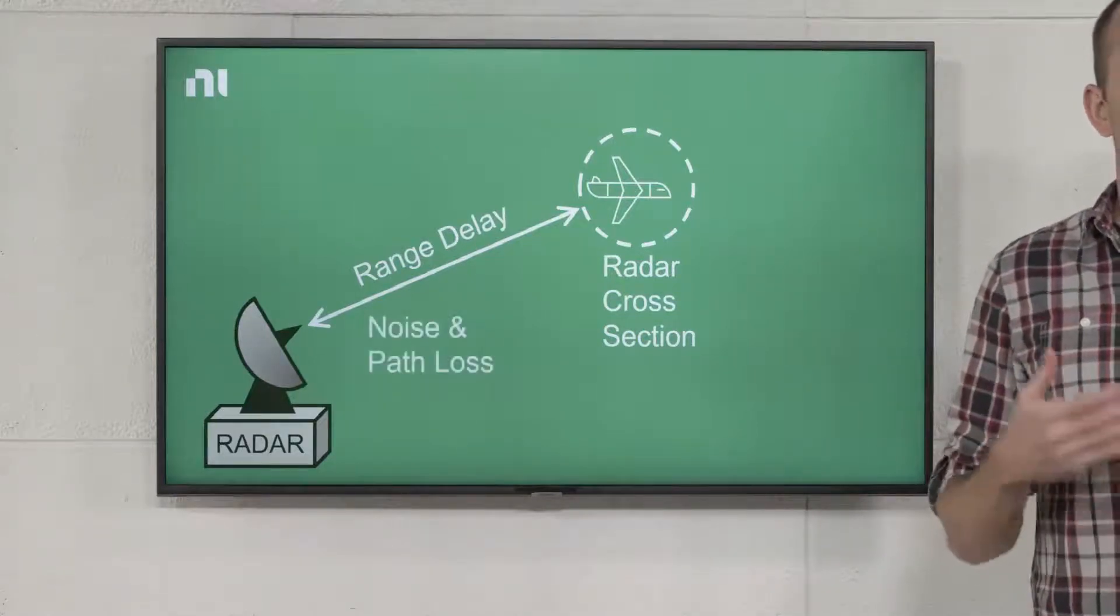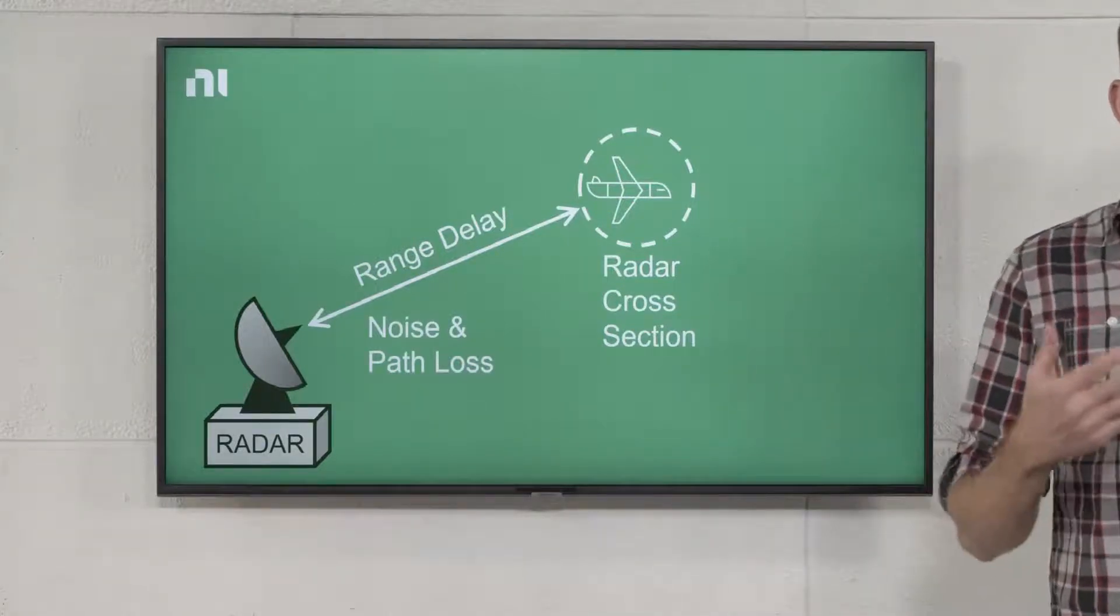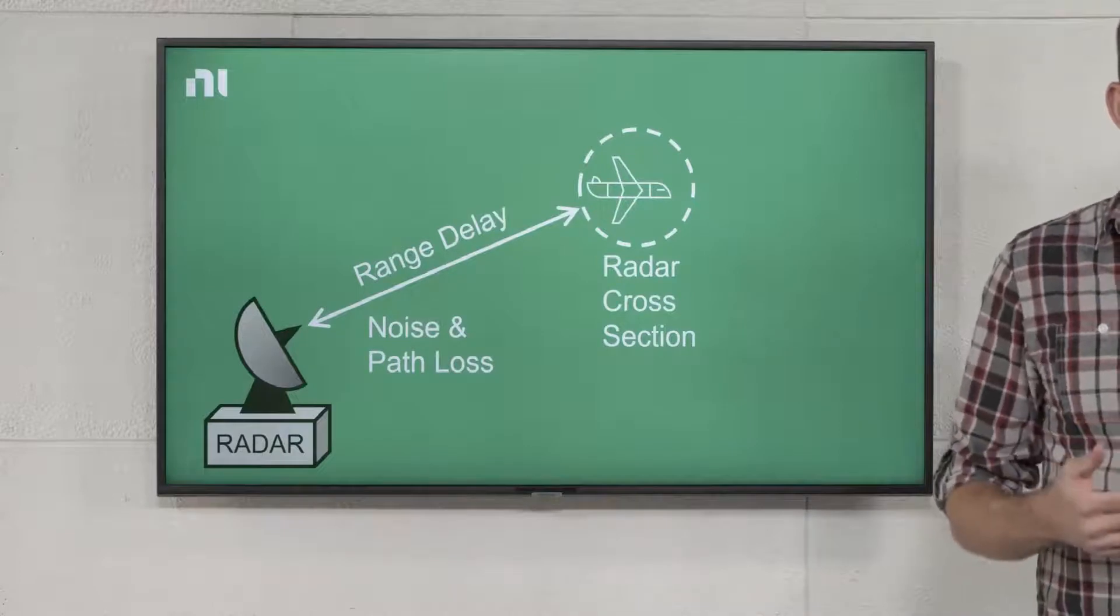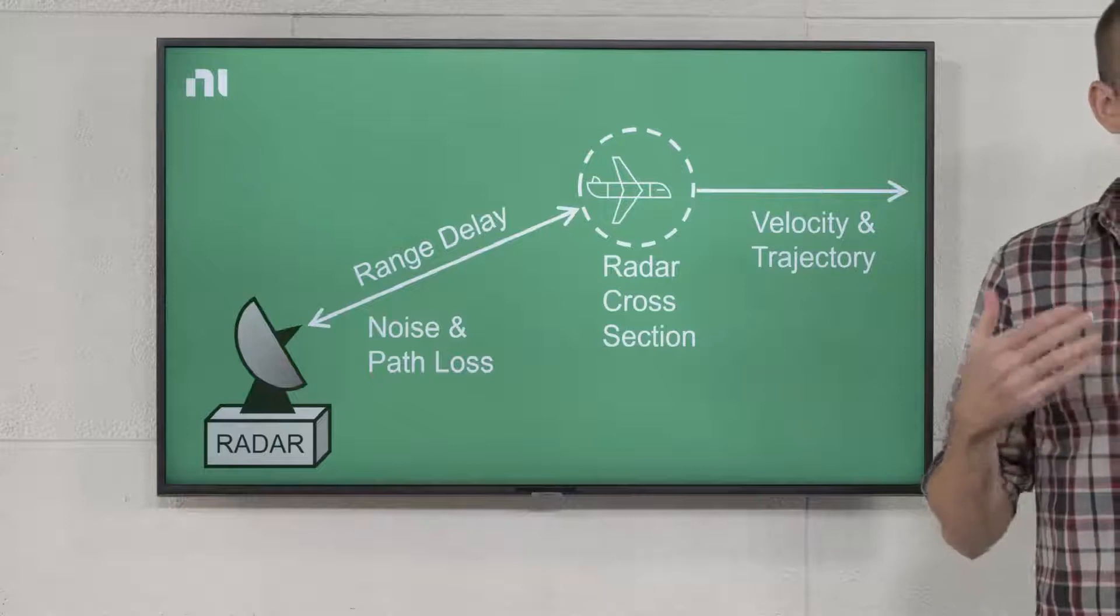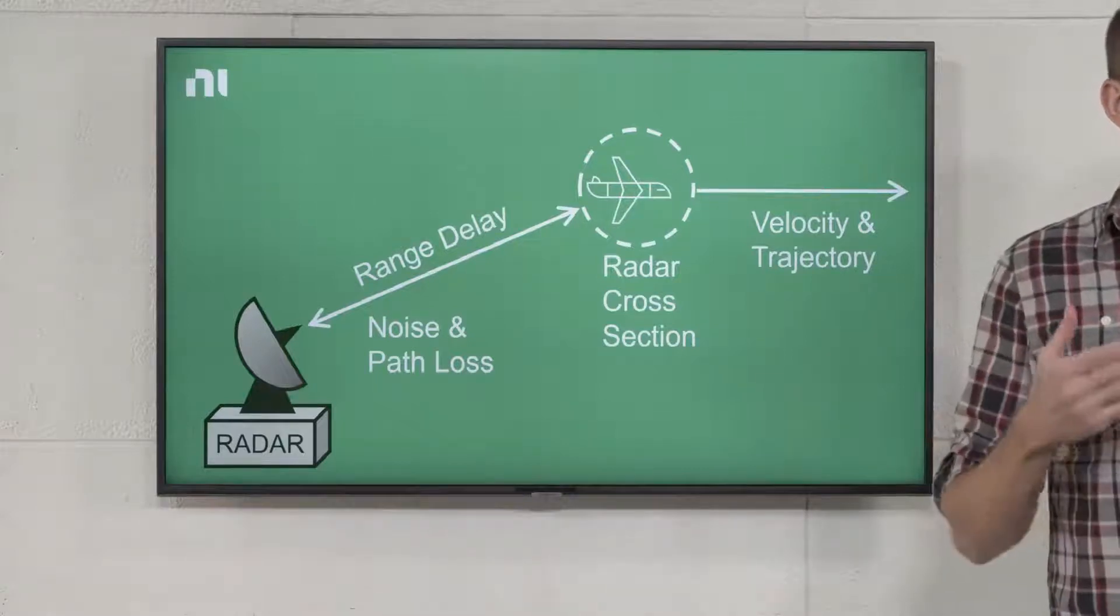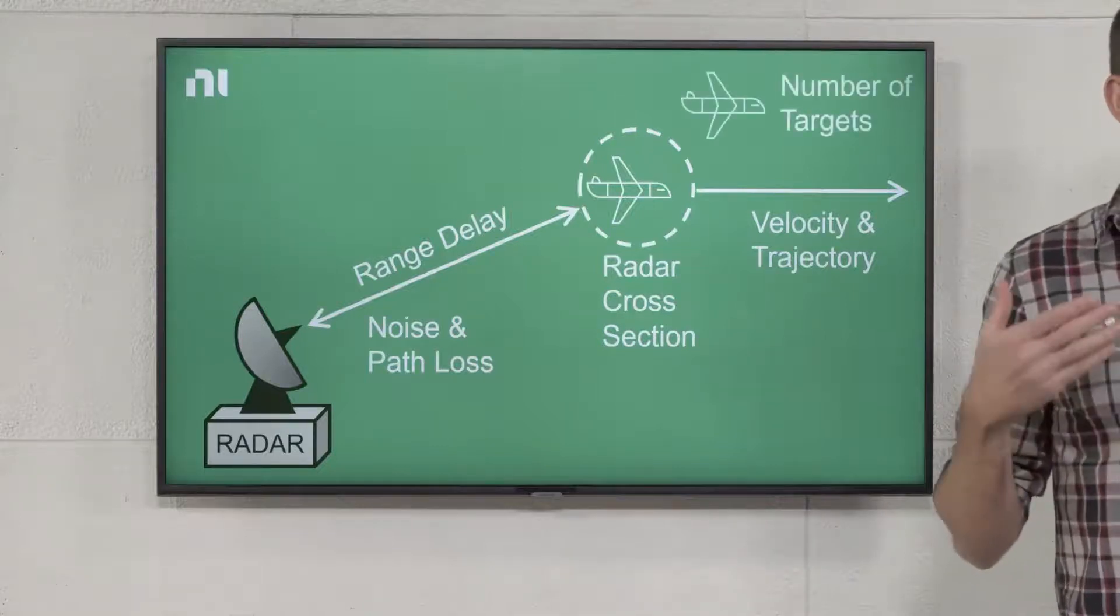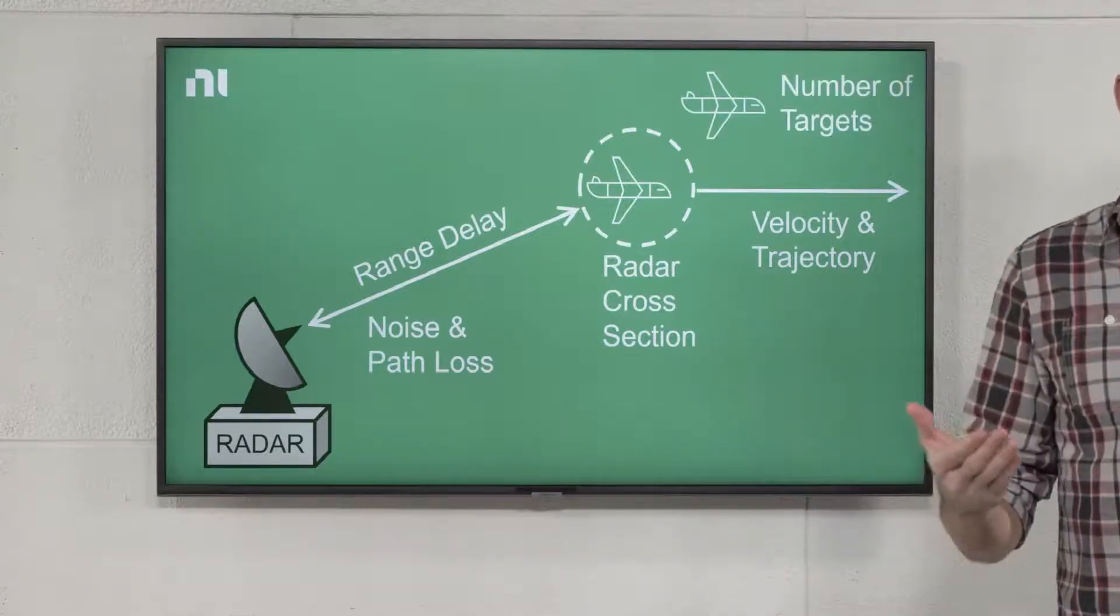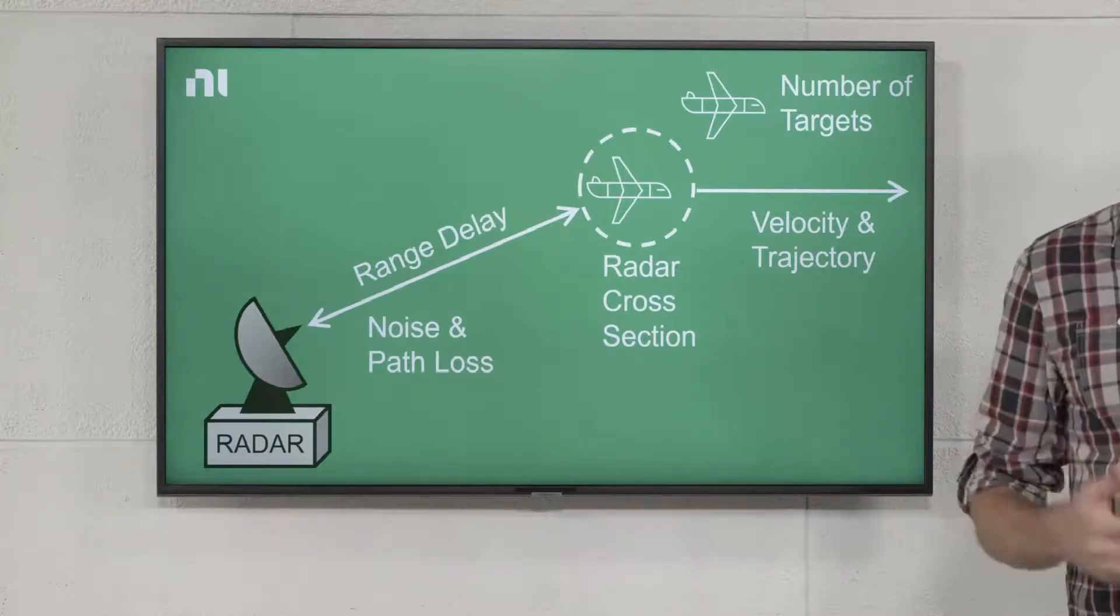We may also factor in other things that affect the signal as it travels to and from the target, like noise and propagation loss through the atmosphere. If we're simulating a moving target, we'll want to consider its velocity and trajectory to determine the amount of Doppler shift we should apply to the signal. And since most radar systems are designed to track multiple targets, our target generator will probably want to simulate multiple targets to test that capability.